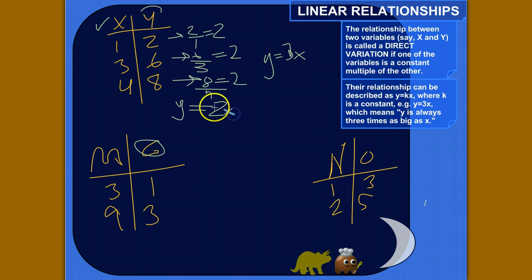And just, y is twice as big as x. So if x is 1, then y is 2. If x is 3, then y is 6.